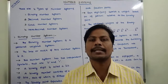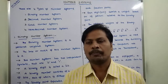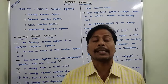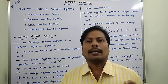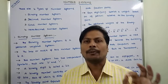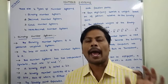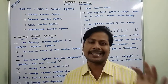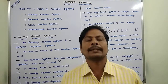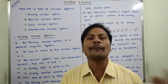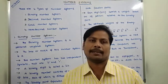Now we will go through each number system. First, the binary number system. A binary number system is generally used in digital computers because digital computers use switching circuits. These switching circuits have two states: either a zero state or a one state. The zero state can be represented as the off state, and the one state can be represented as the on state.